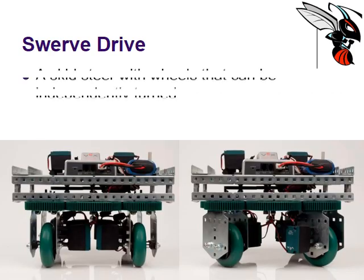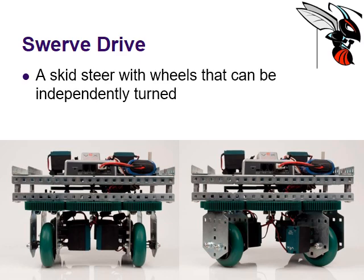The swerve drive is essentially a skid steer with wheels that can be independently turned. It's really maneuverable — that's a massive pro. However, a significant con is that if you look at all the motors on this robot, we've got four motors controlling each of the four wheels, plus four motors controlling the turns as well. So a lot of motors are involved in creating a swerve drive.